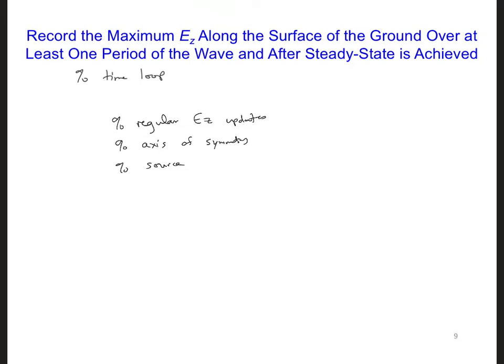One way to do this is to write a separate spatial loop, or two loops, because we have i and k, that will cycle through all the i's and the k's of the EZs. So I'm going to write for k equals 1 to k max minus 1, that has the same limits as the EZ updates.